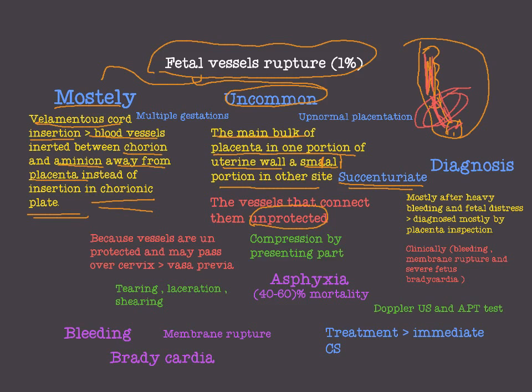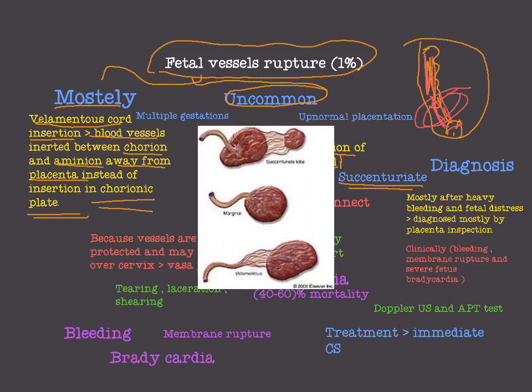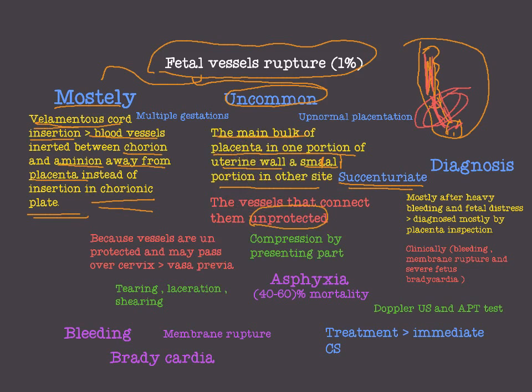Here is a diagram showing succenturiate abnormal placentation and fetal vessel rupturing. This is the main bulk of the placenta on the uterine wall, and another small part of the placenta is on the other side. Between them are blood vessels that link these two parts together.